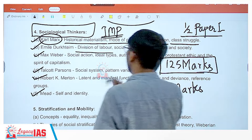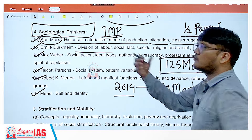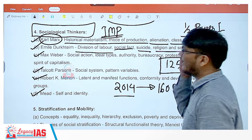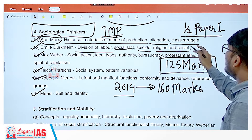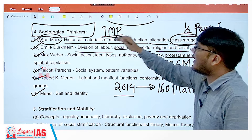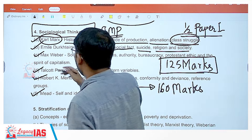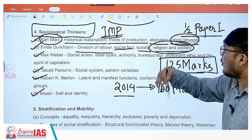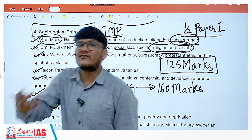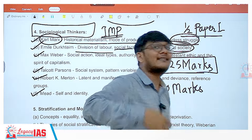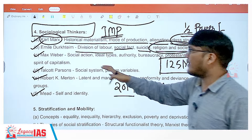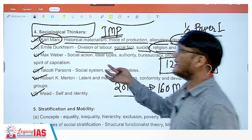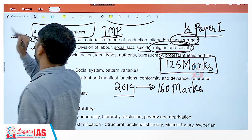For Emile Durkheim: division of labor, social facts, suicide, and religion and society. When reading these, note that concepts can overlap — for instance, reading Durkheim's take on religion can be countered by Karl Marx's ideas on religion, allowing you to compare thinkers within the same topic.